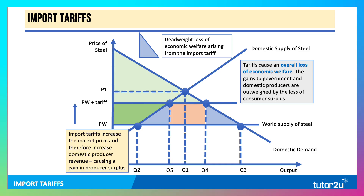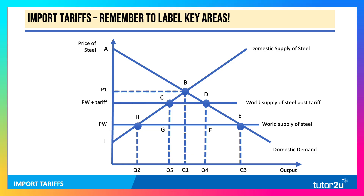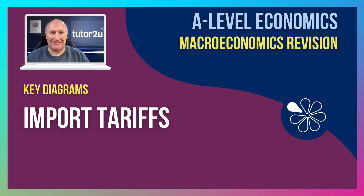The blue areas show the deadweight loss of welfare arising from the tariff. In the exam, please remember to label key areas — draw your diagram, then label the key intercepts so that, for example, you can show that the deadweight welfare loss is HCG plus DFE. Labelling diagrams is a really nice, easy way to build and integrate the text you're writing with the diagram. Good luck if you're using tariff diagrams in your exam.